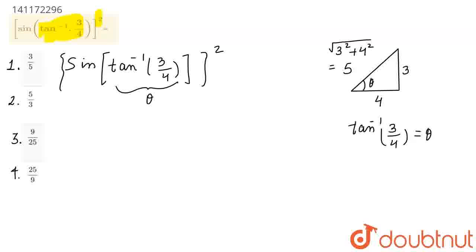So, I can write this to be equal to sine of theta and we need to square this. What happened here? It will be opposite upon hypotenuse.